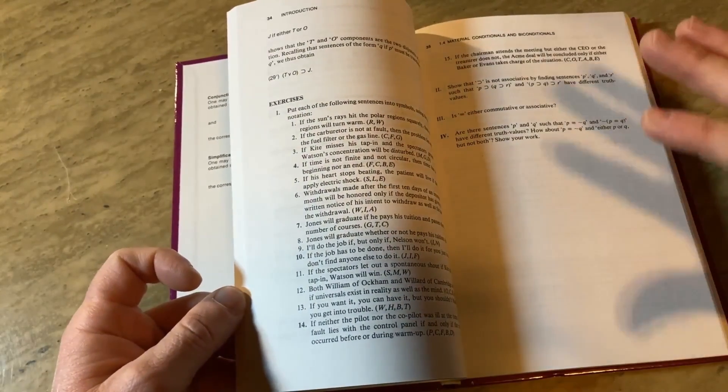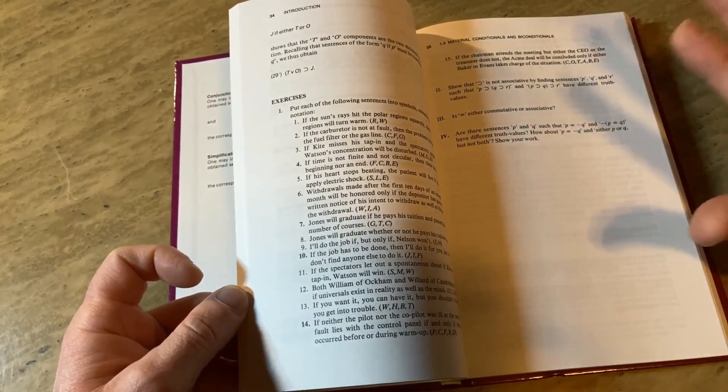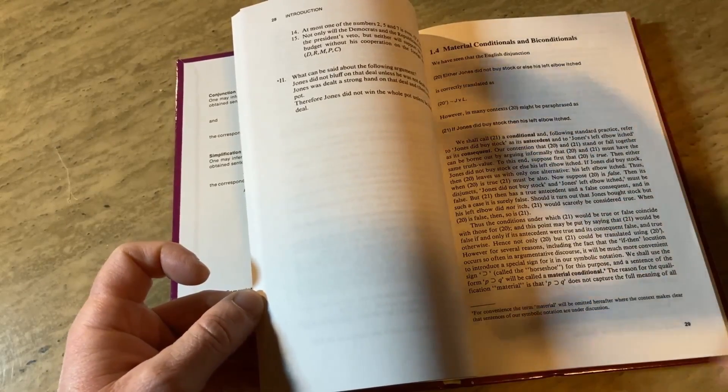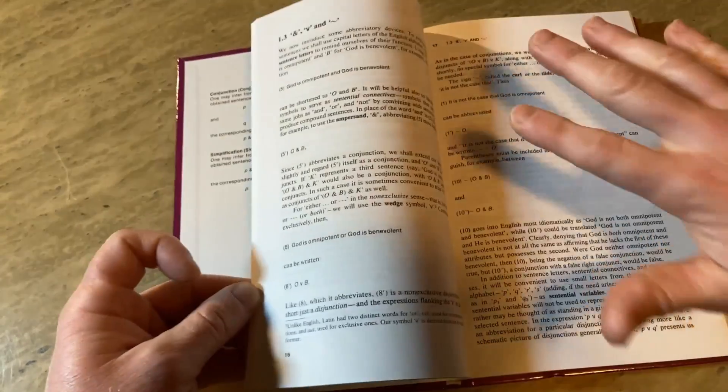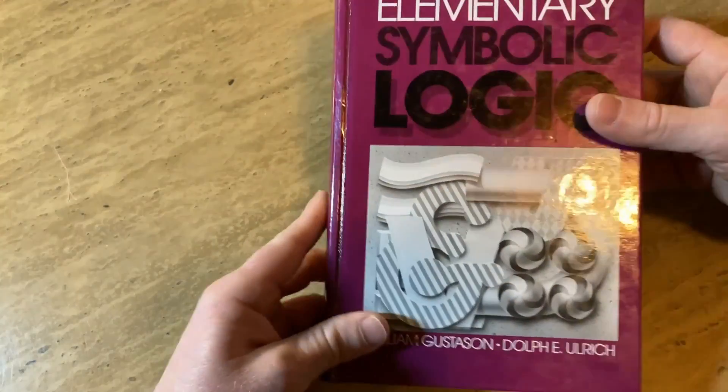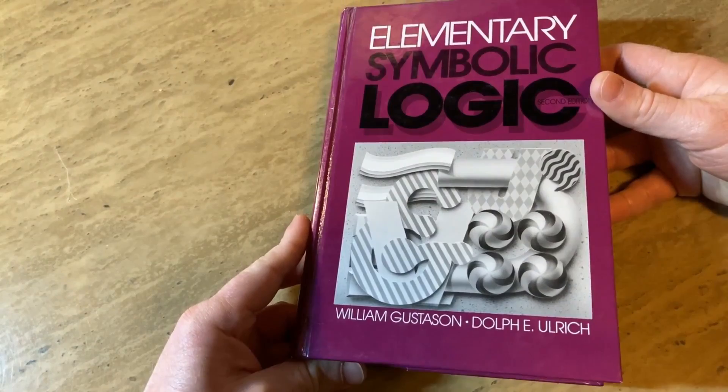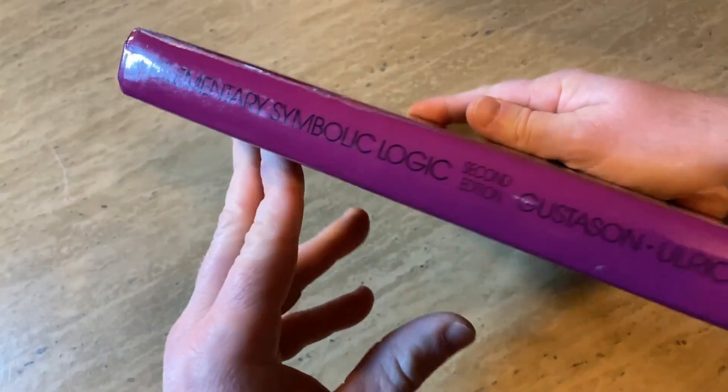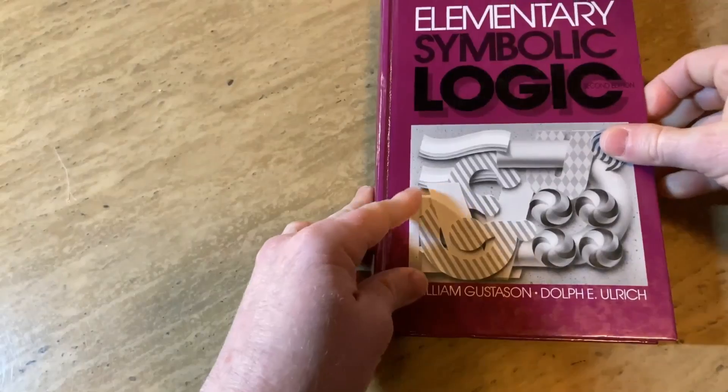For example, the book by Velleman is a great book, and it's amazing. And I'll leave a link in the description to that book, and this one as well, in case you want a book on pure logic. So this is a pure logic book. It's just logic, and it's very thorough. The book is called Elementary Symbolic Logic, and it's by Gustafson and Ulrich. And I believe you can still find this. I will leave a link in the description in case you want to check it out.